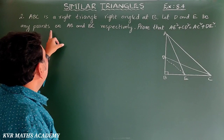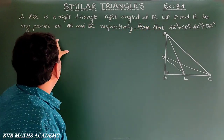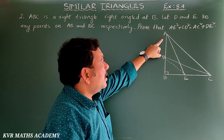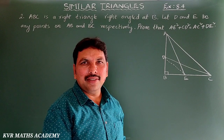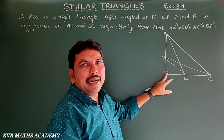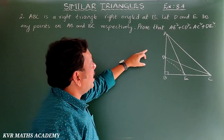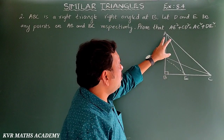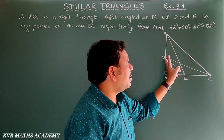Next, the second question. ABC is a right triangle, right angle at B. Let D and E be any points on AB and BC respectively. Prove that AE² + CD² = AC² + DE².